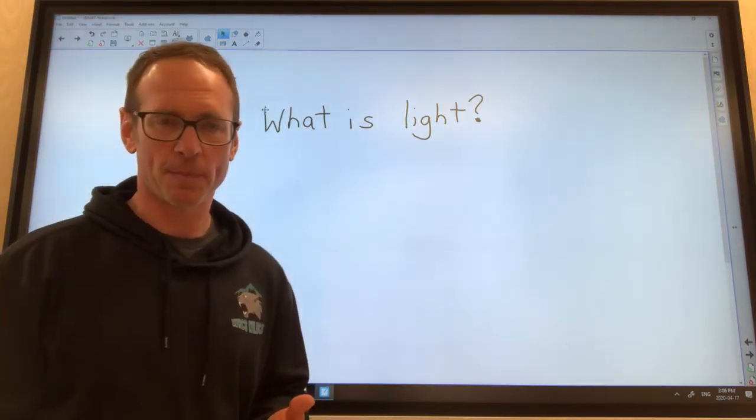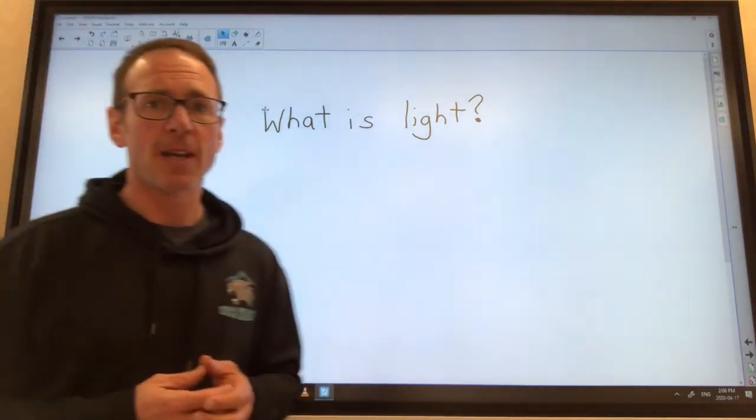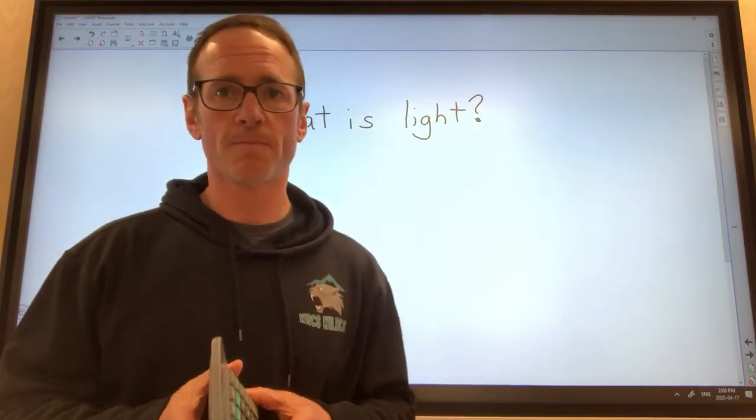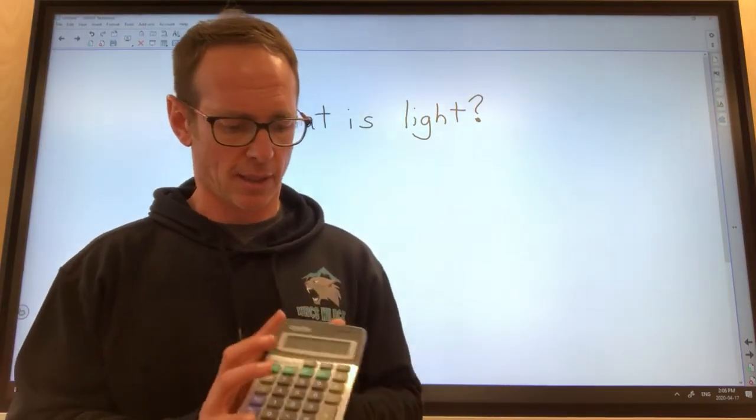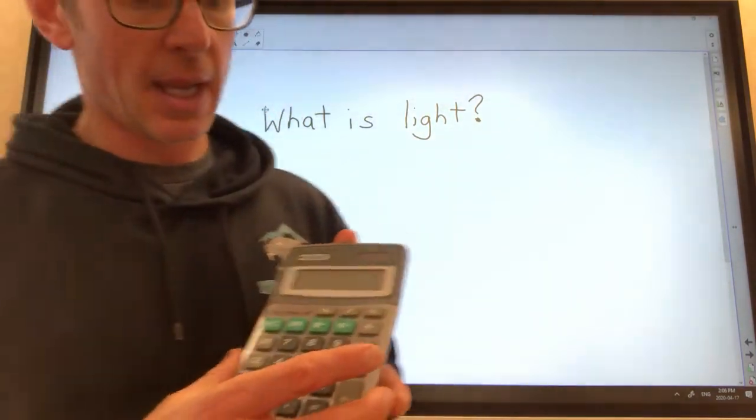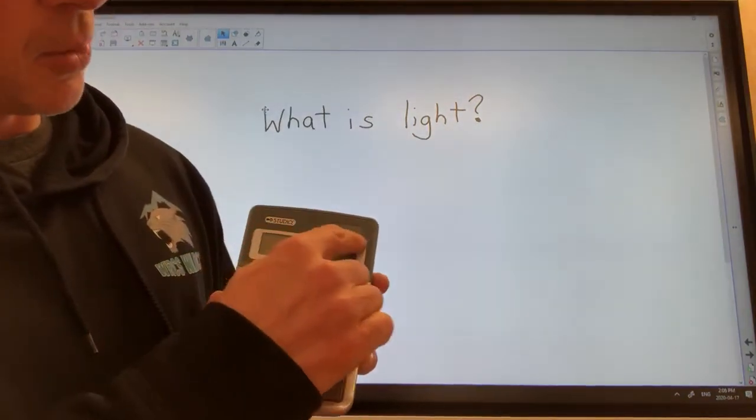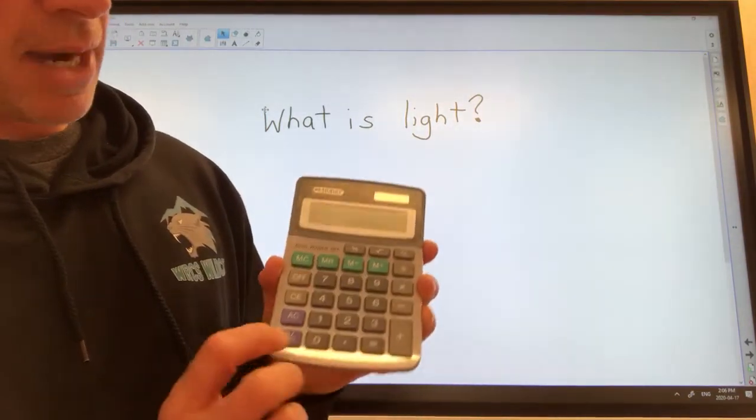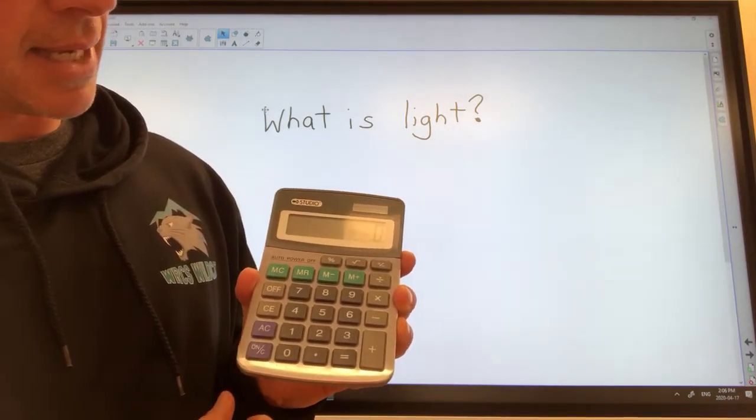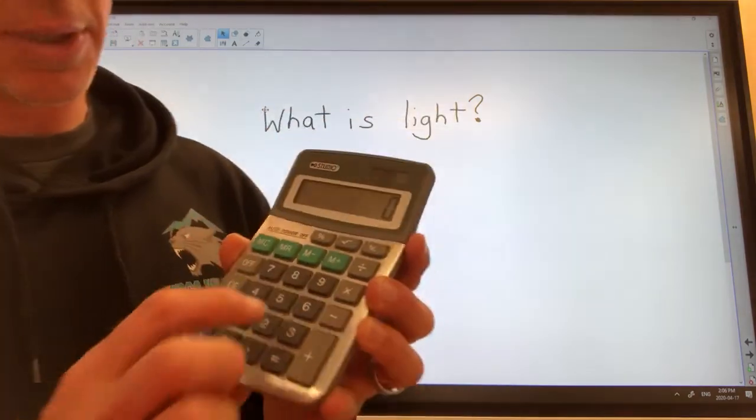When we're looking at what light is, it is actually probably easiest to show it through just a really simple little gadget here. So I have this calculator and you can see up in the top corner here there's a rectangle. That rectangle takes in light. So when I turn it on, I'm just going to put a few numbers in so you can see whether it's on or off.